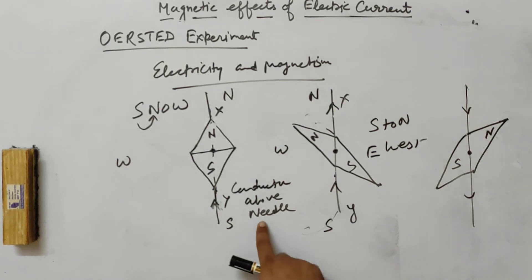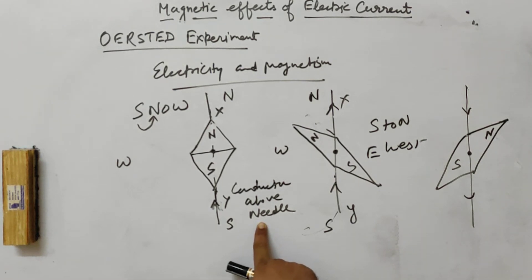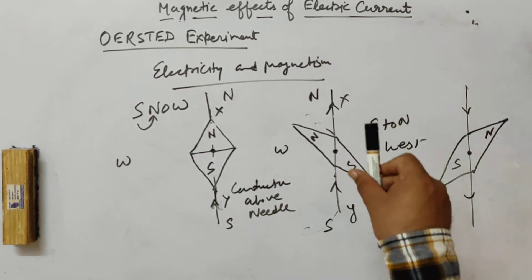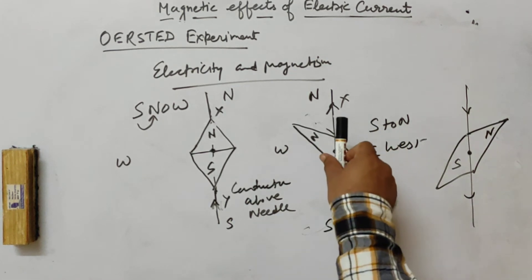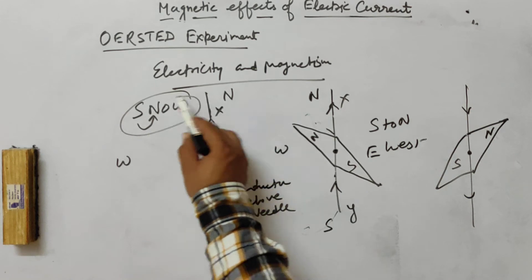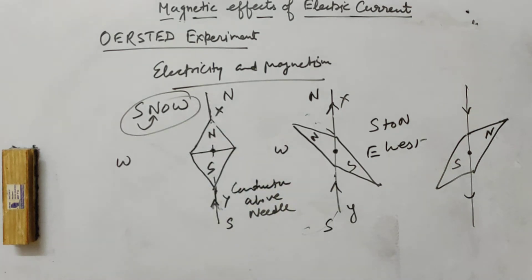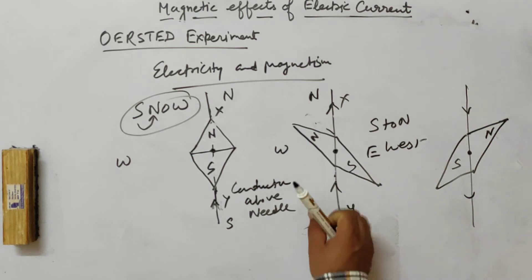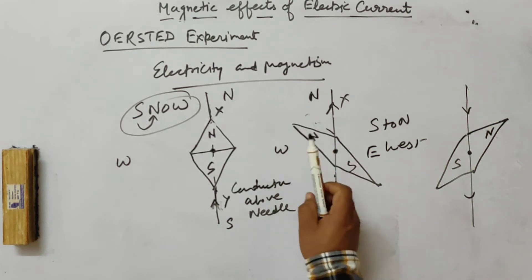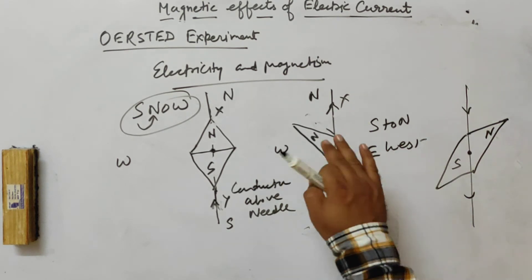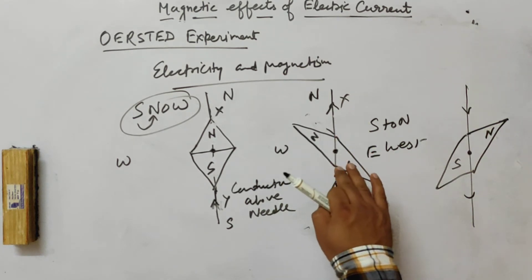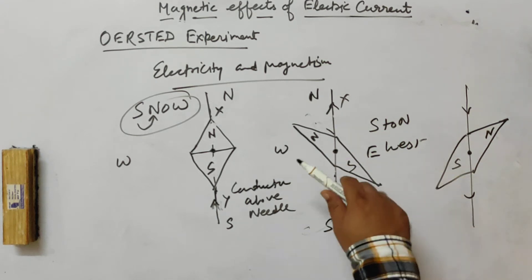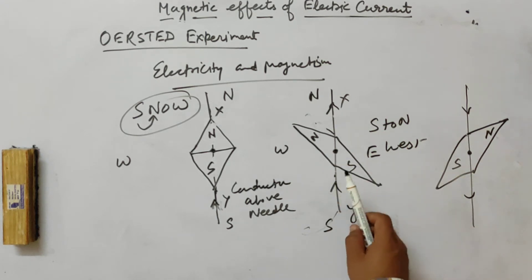Also, depending on whether the conductor is above the needle or the needle is above the conductor, the rule is valid. If the conductor is above the needle (south to north, deflection towards west), and you reverse the position, the deflection will also be reversed.